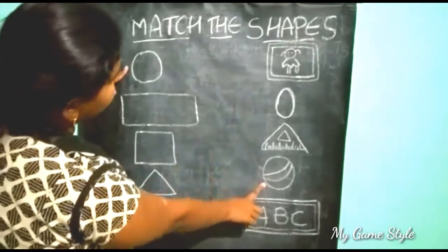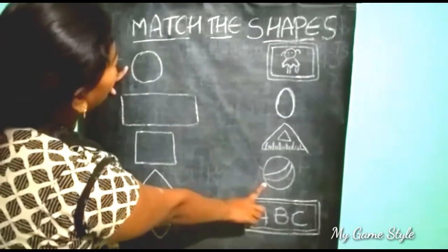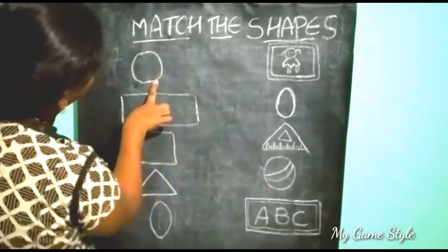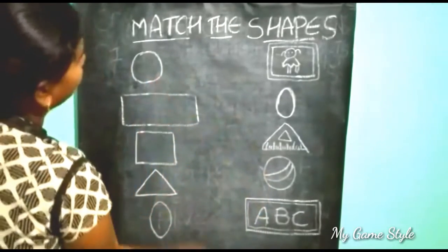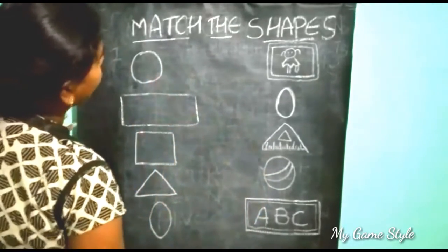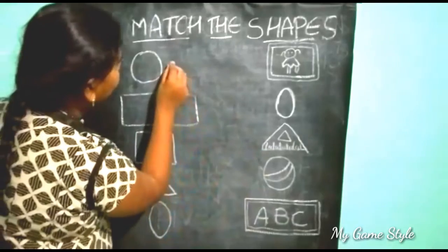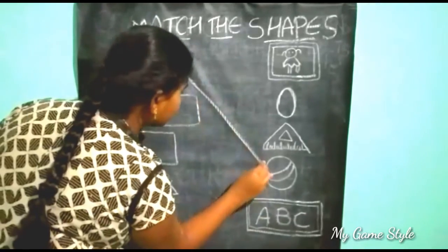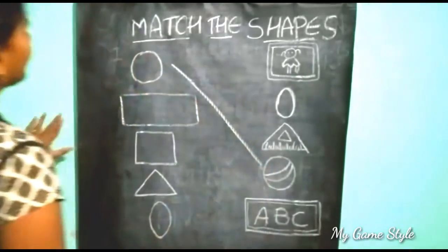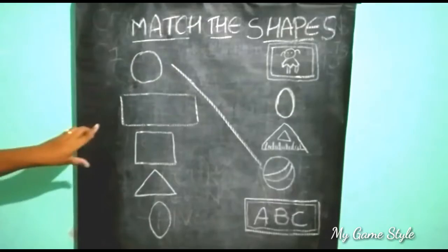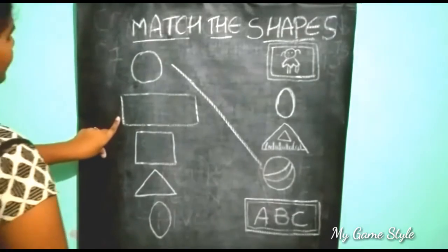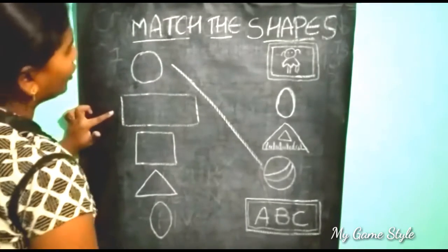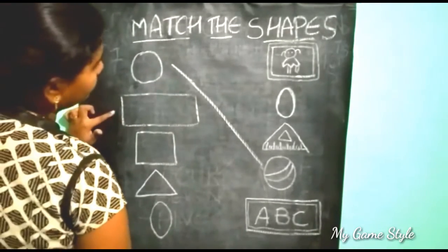Here, a Ball is there. Ball is similar to Circle, so we need to match them. Next, this is Rectangle — which is similar to Rectangle?